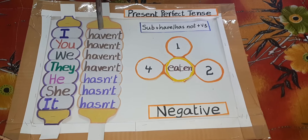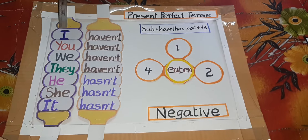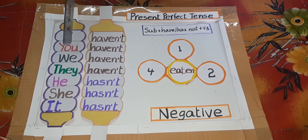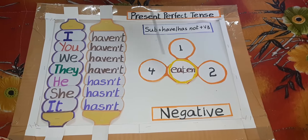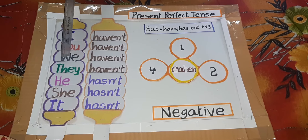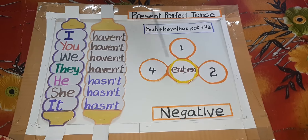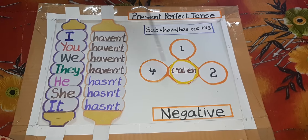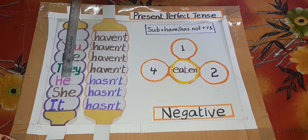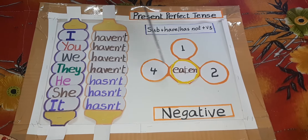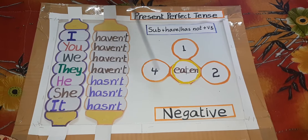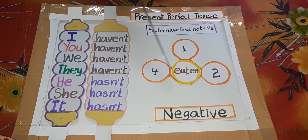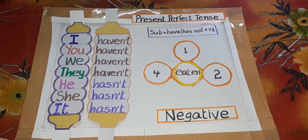With contractions: I haven't eaten, you haven't eaten, we haven't eaten, they haven't eaten, he hasn't eaten, she hasn't eaten, it hasn't eaten.